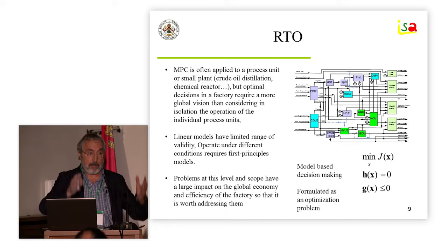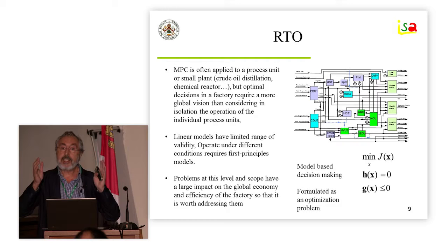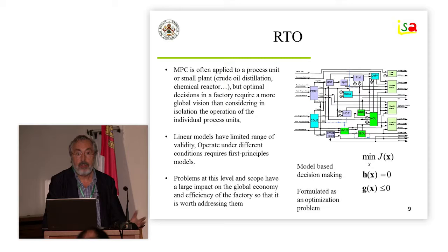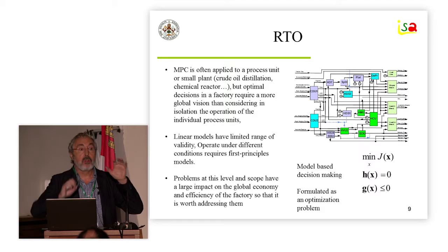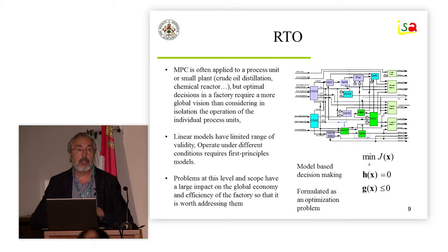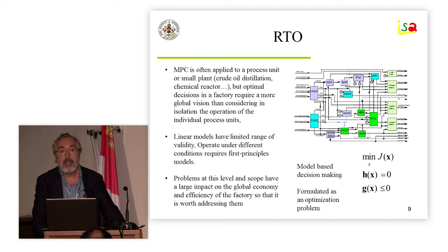But this has some drawbacks. When you are the manager of a factory, what is important is not that one specific unit is doing very well — what you want is a global optimum, a global benefit. It quite often happens that what is good for one part of the process is not good for the whole operation. So if you wish to introduce optimal operation into the production, you have to consider the whole set of elements and increase the scope from a process unit to a whole plant.